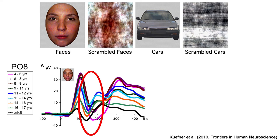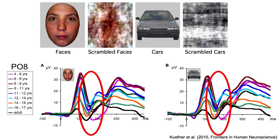But are these huge differences in ERPs a result of changes in face processing, or do they reflect more general changes? If we look at the ERPs elicited by the cars, we see the same general pattern of age-related changes, so it seems that most of the developmental changes are not specific to faces.